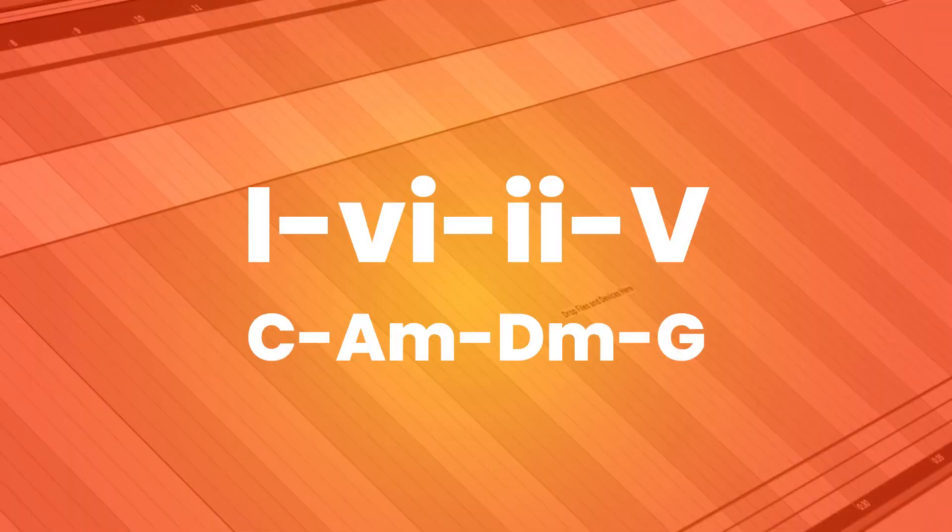Also, if we just replace the 4 chord with the 2 chord on that progression, you end up with the 1, 6, 2, 5 — which is often called the 1950s progression: C, A minor, D minor, G.